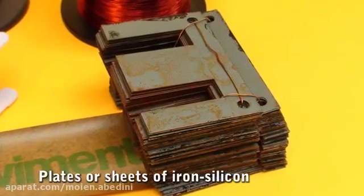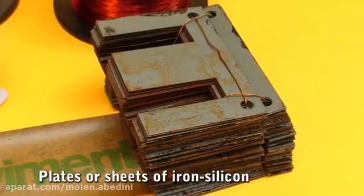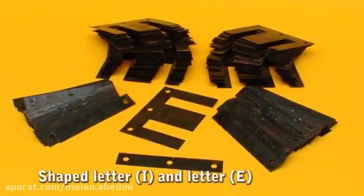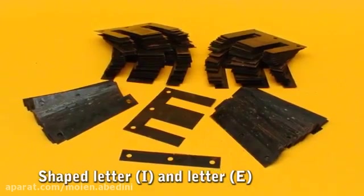Silicon iron sheets. These silicon iron sheets come in the shape of the letter I and the letter E, interspersed, forming the core of the transformer.